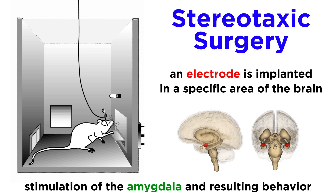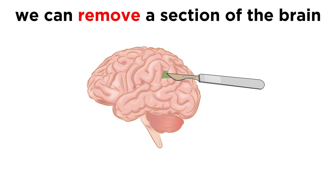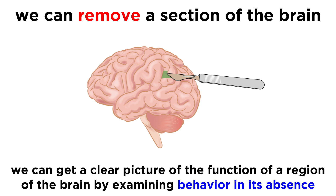This can give us information about that part of the brain. And, of course, small sections of the brain can be removed entirely, which produces similarly valuable information about brain function by examining how behavior changes in its absence. These kinds of lesion studies are responsible for a lot of our knowledge regarding certain regions like the amygdala.